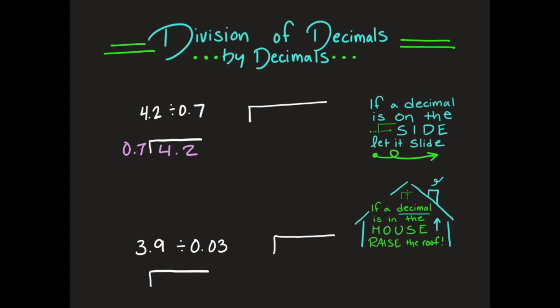These are the types of problems you're going to see today. I have another saying for you: if a decimal is on the side, let it slide. Whenever you see a decimal that's on the side, we have to make it become a whole number — we cannot have a decimal on the side. So I'm going to move my decimal point until I have a whole number. When I move it over one spot, I now have 7, and that is a whole number. If I move it over once, I also have to move this decimal over once as well.